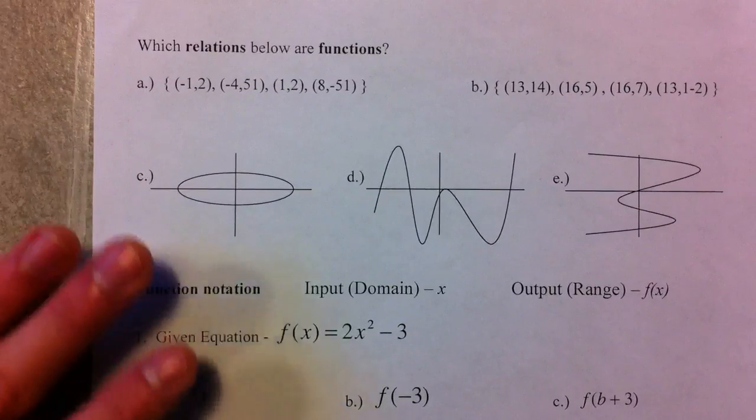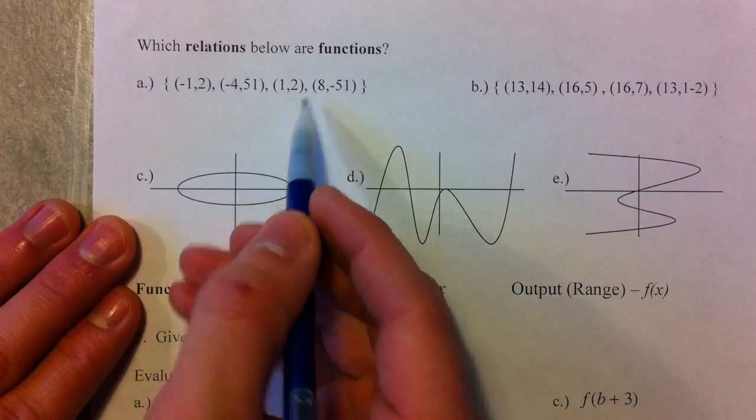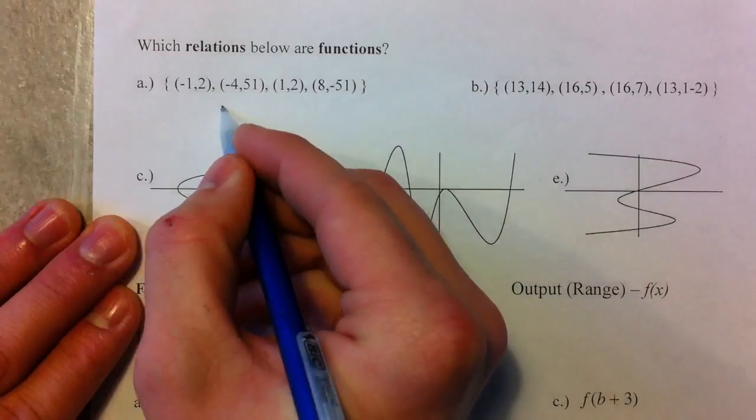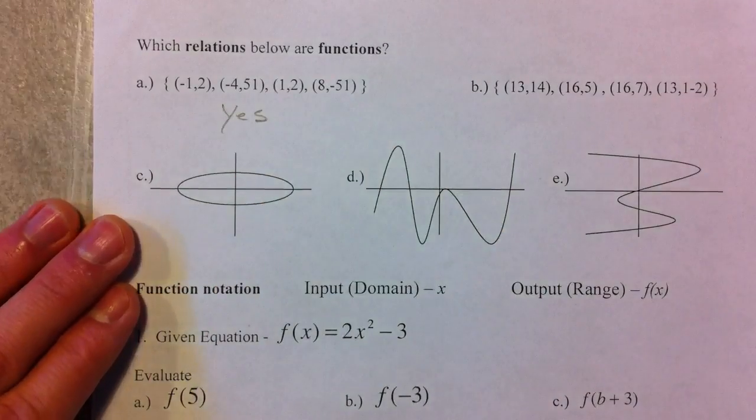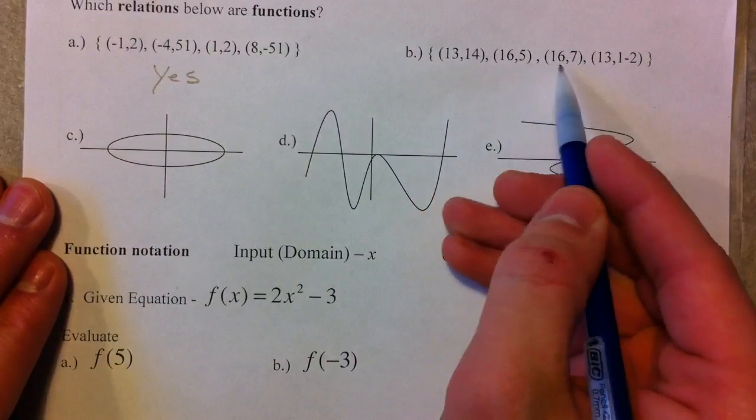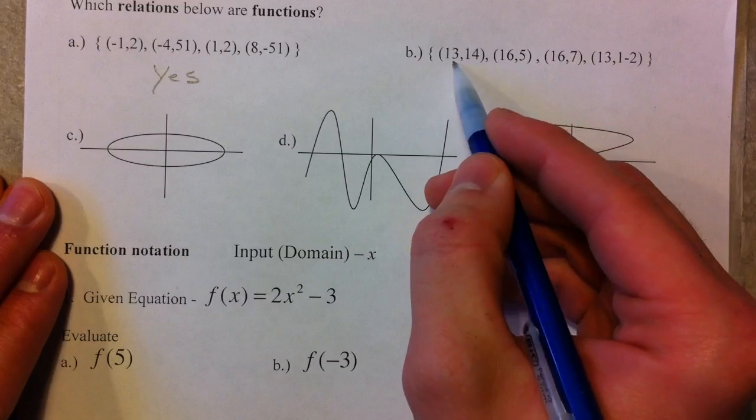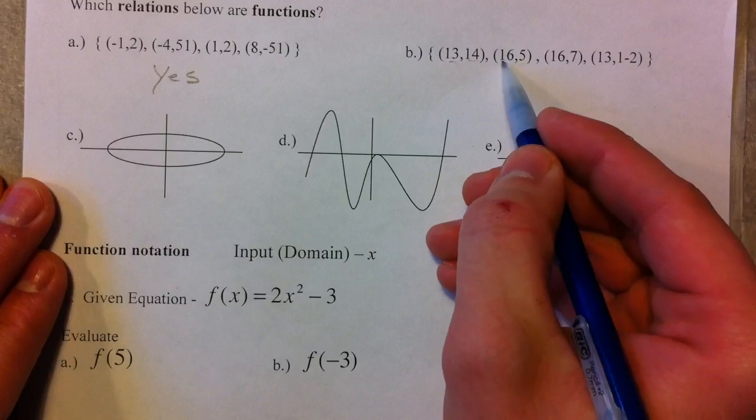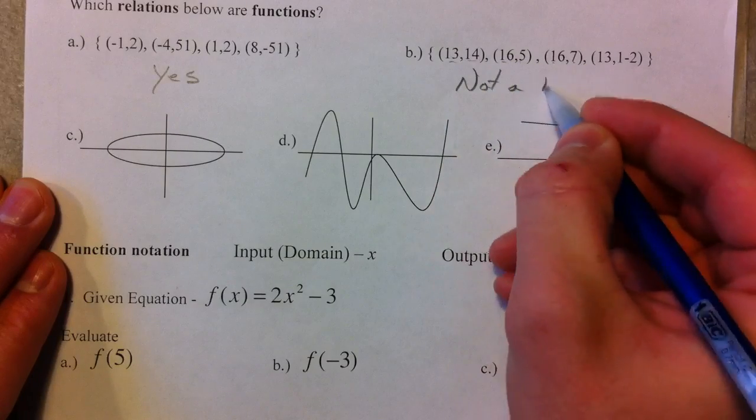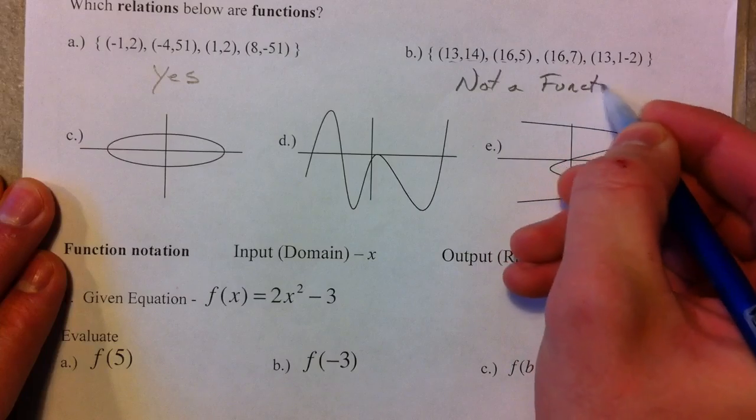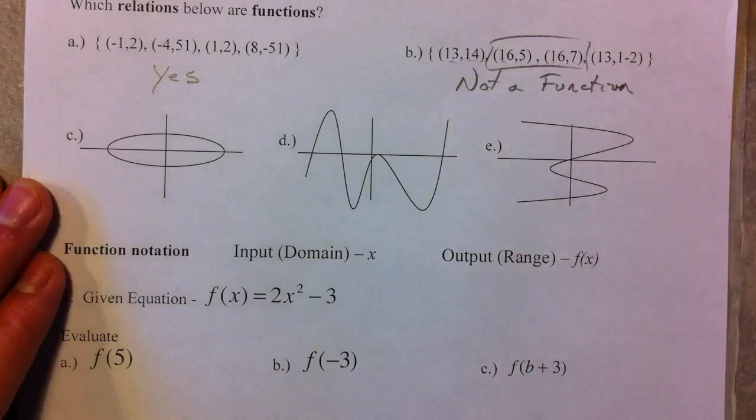So are these functions? Well, negative one, negative four, one, and eight. All of these X's are different. So yes, this is a function. Thirteen, sixteen, sixteen, and thirteen. And so we've got thirteen goes to fourteen, sixteen goes to five, and sixteen also goes to seven. So this is not a function.